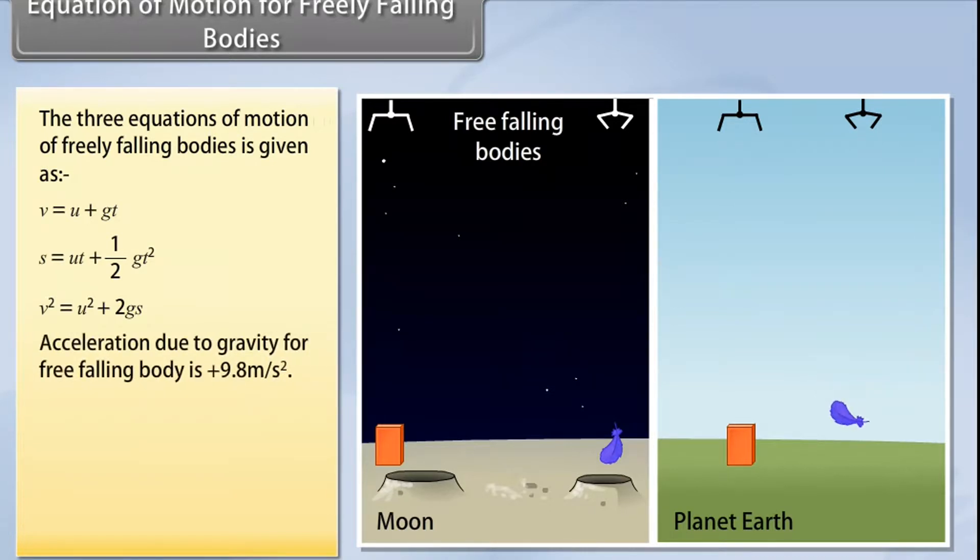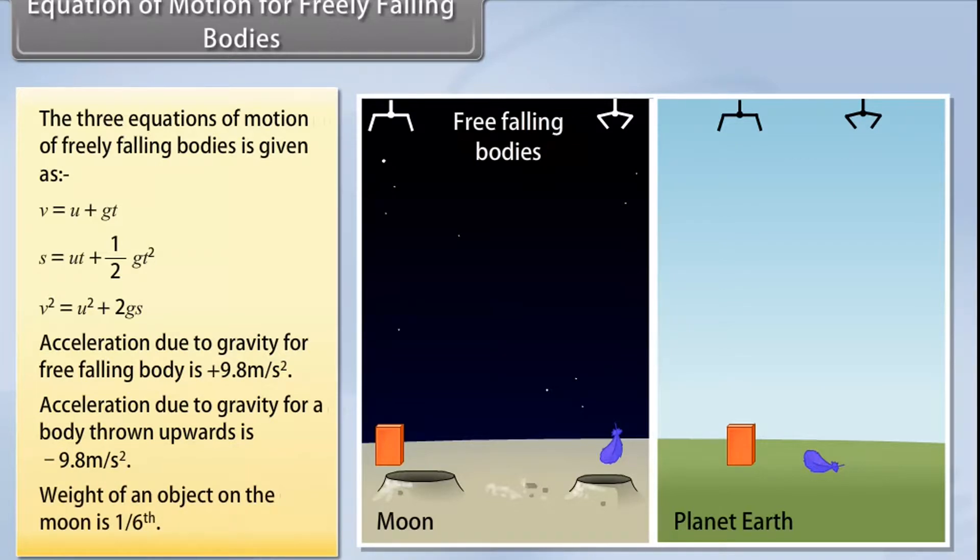Acceleration due to gravity for a body thrown upwards is minus 9.8 meter per second square. Weight of an object on the moon is 1 upon 6th.